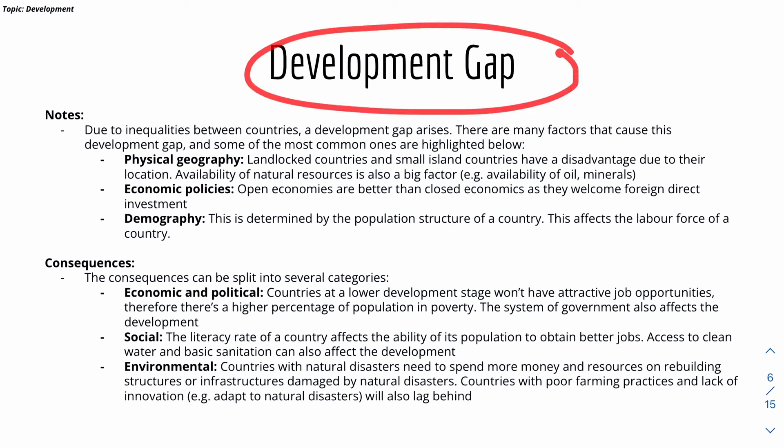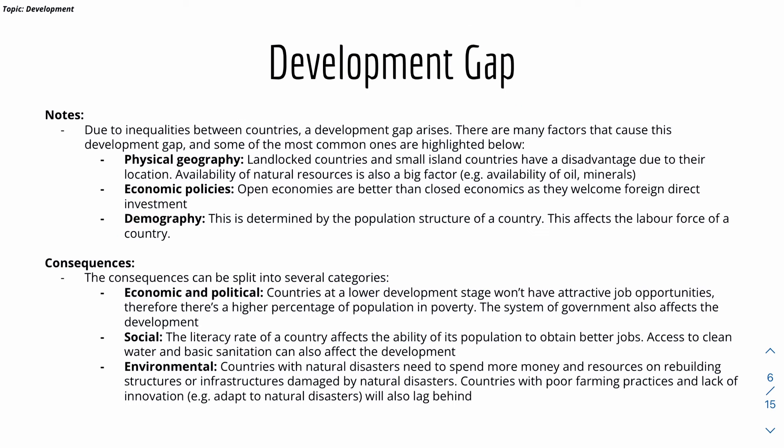The consequences of the development gap can be split into several categories: economic and political, social, and environmental. For economic and political, countries at the lower development stage won't have attractive job opportunities, meaning a high percentage of the population lives in poverty, and the system of government also affects development. For social, the literacy rate of a country affects the ability of its population to obtain better jobs — a high literacy rate means people can read and write, so there are better job opportunities. Access to clean water and basic sanitation can also affect development.